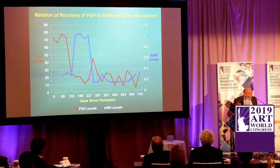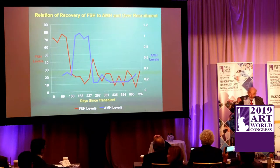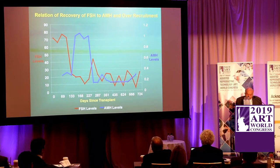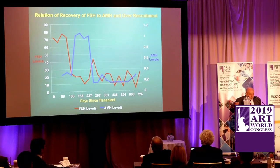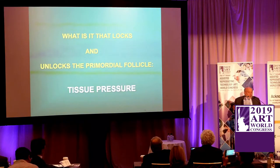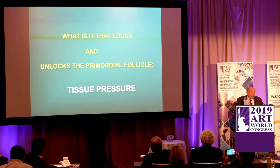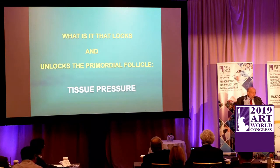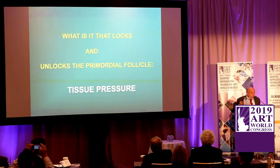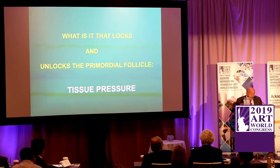As FSH — the red line — drops towards normal about four months post-transplant, AMH — the blue line — goes up to extremely high levels and then drops again four to eight months later. There is an over-recruitment of primordial follicles for some reason when we transplant ovarian tissue. We postulated it was tissue pressure, and now the evidence from everywhere, including Hayashi's lab, is overwhelming that pressure controls not only meiotic arrest in the fetus but also the recruitment of follicles in adults.